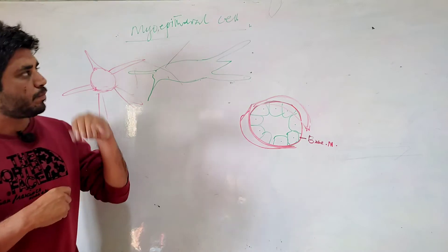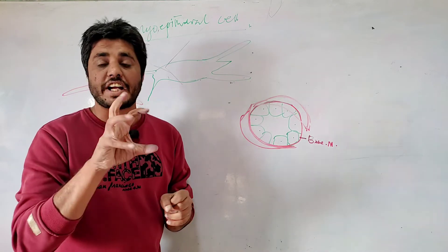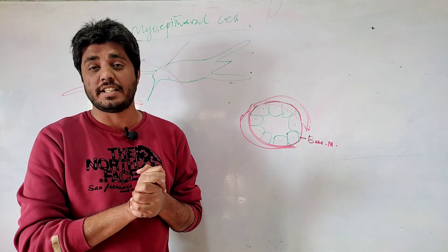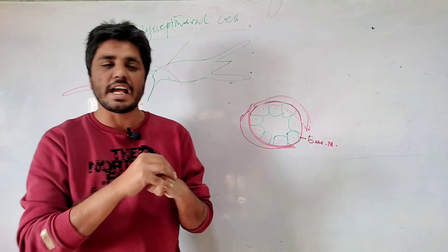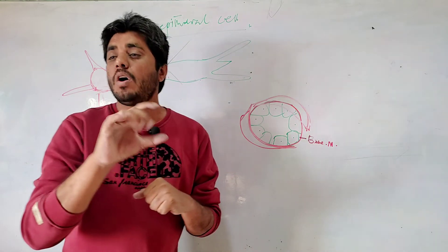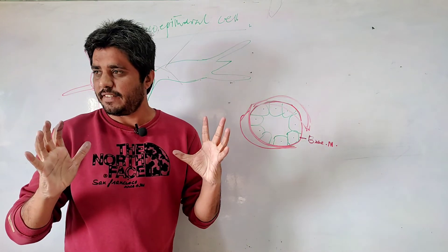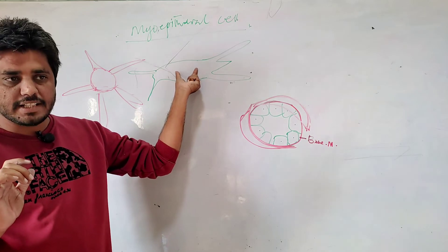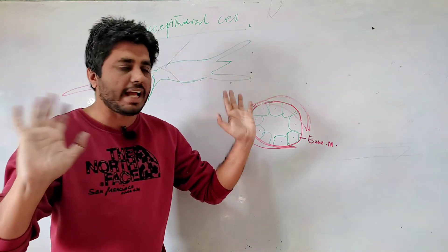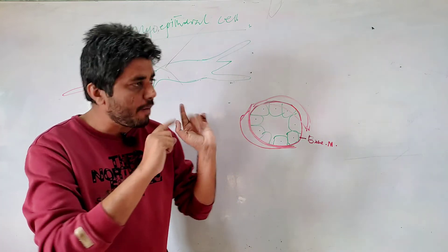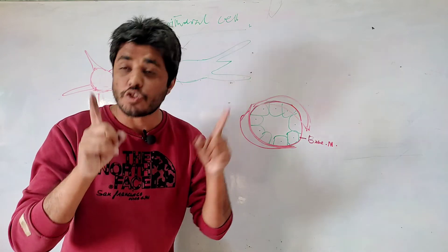You know why they are called myoepithelial cells? These cells actually have the ability to do contraction. Contraction is a function of muscle cells. So this single cell, which we call myoepithelial, has the ability to contract. In their inner structure they are much similar to smooth muscle cells, although their overall shape is different because they have cellular projections whereas smooth muscle cells do not.